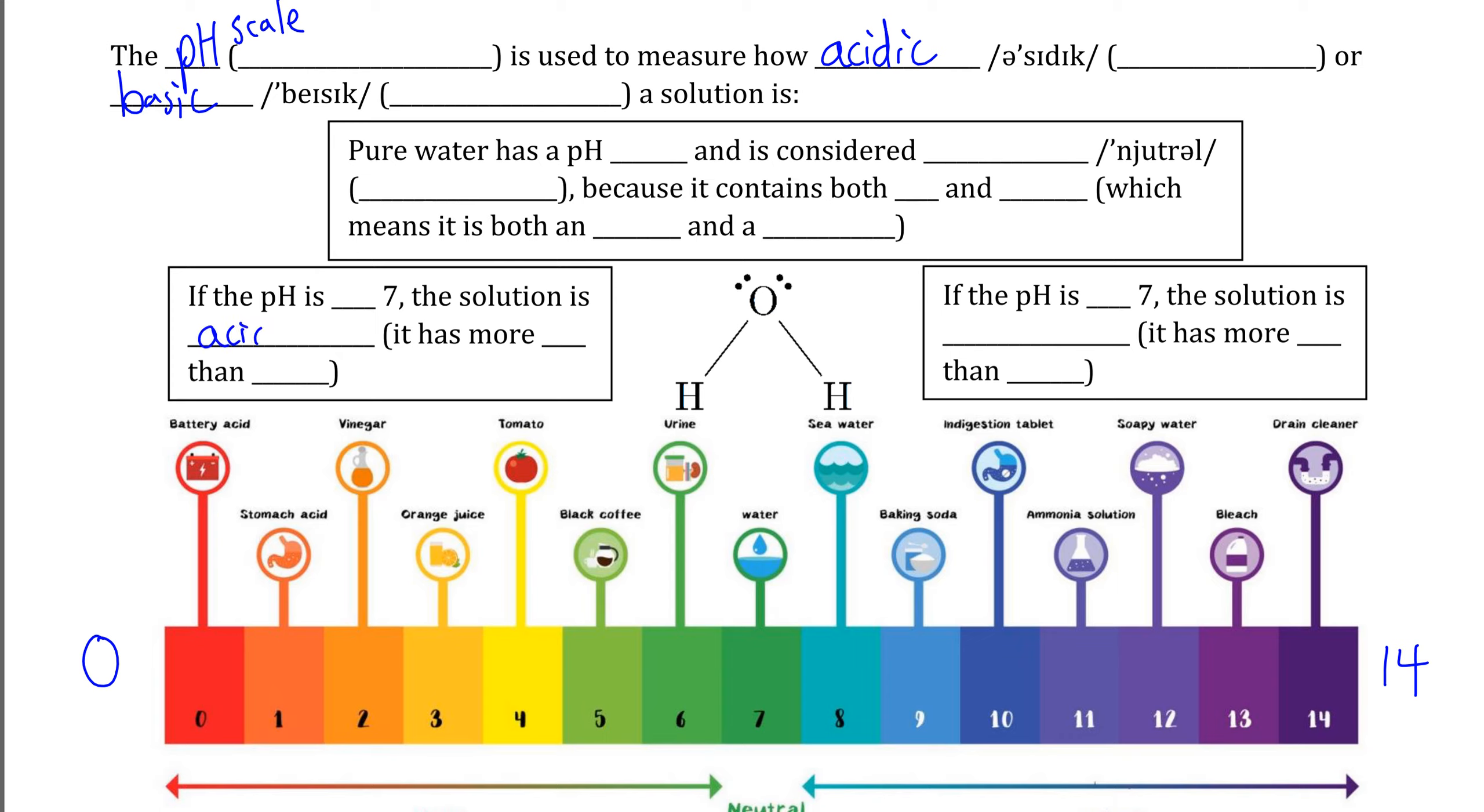If we start at the bottom of the scale, this is the acidic side of the scale. So if the pH is between 0 and a pH of 7, the solution that you're dealing with is more acidic, meaning that the solution has more H+, meaning we have more acid in the solution than we have OH-, which tells us we're dealing with base.